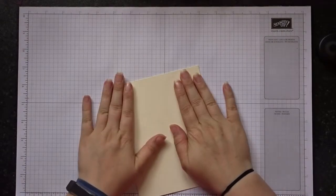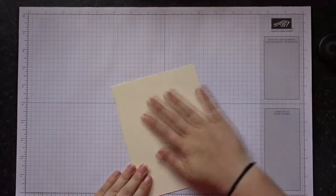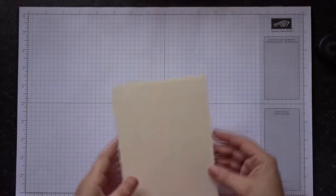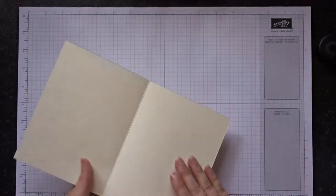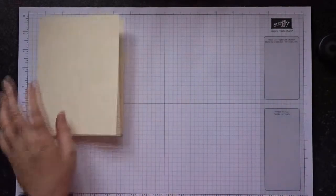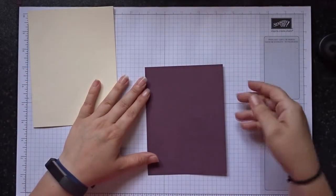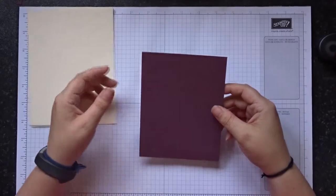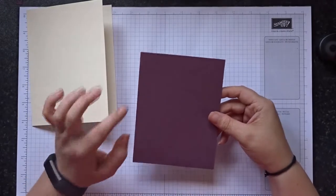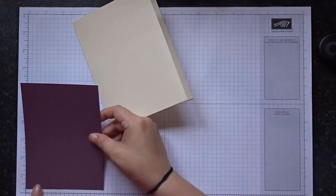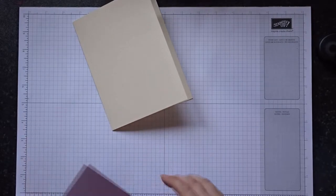So the first thing you're going to need is your card base. I've just had a bit of leftover cream cardstock from a previous project. This is six and a half by ten inches folded in half. You'll then also need the card front which I've used Fresh Fig to match with the rest of my collection, and this is four and a half inches by six inches.